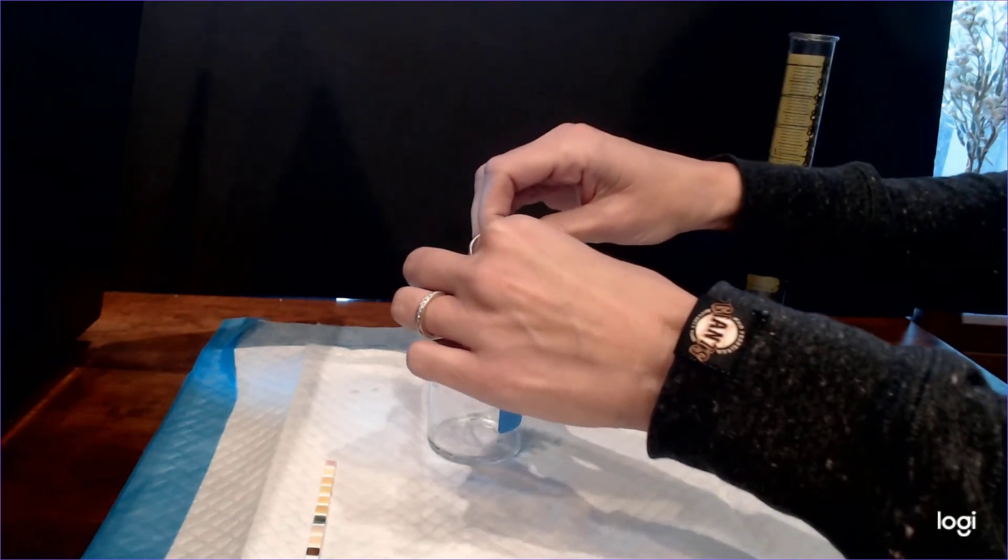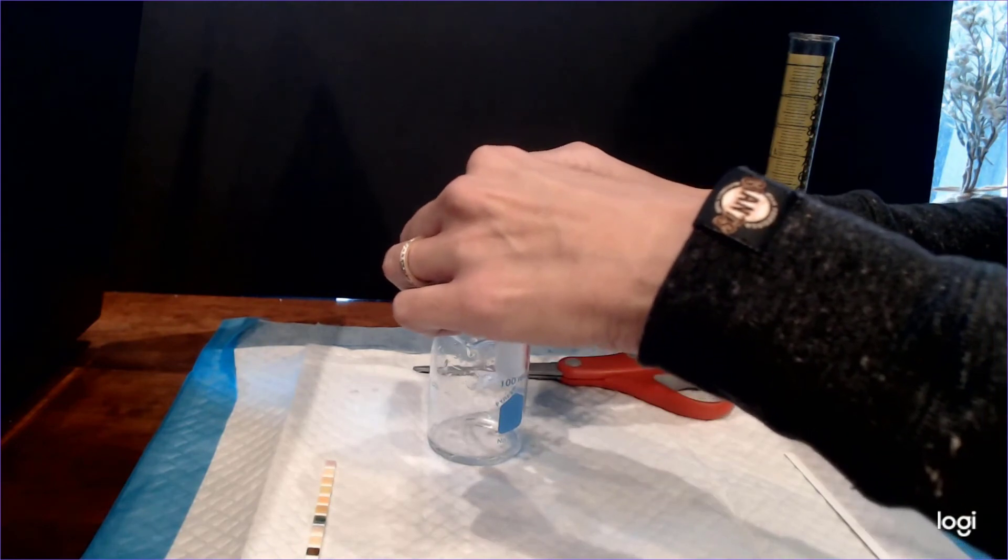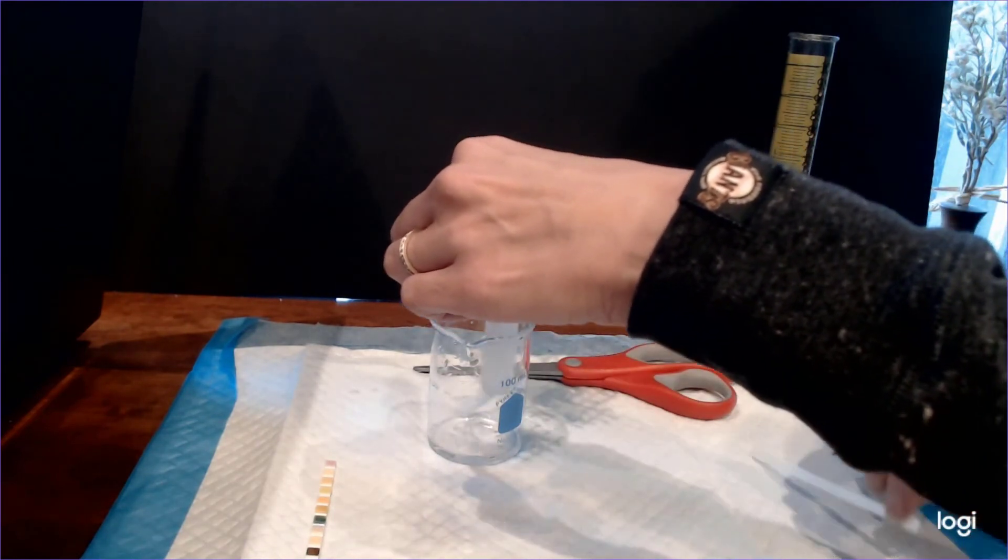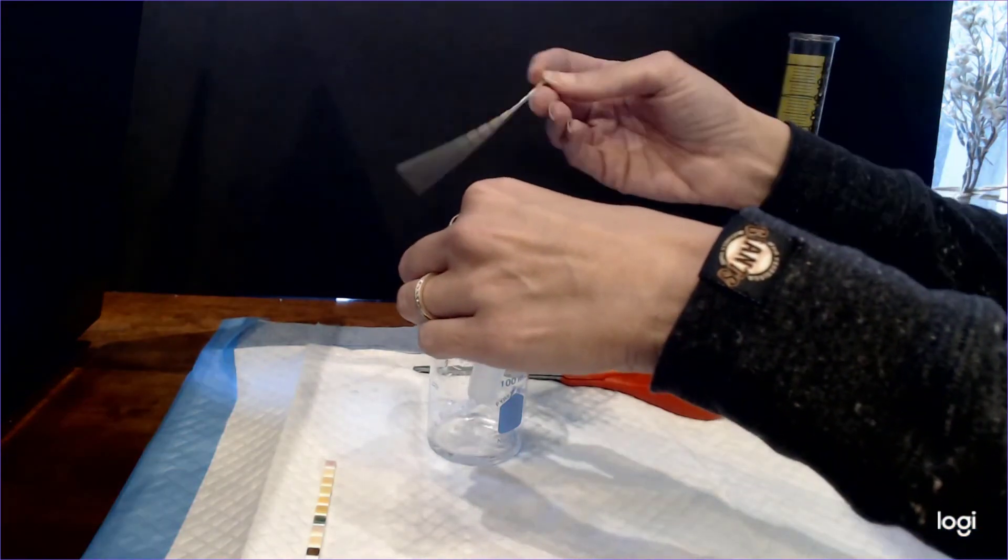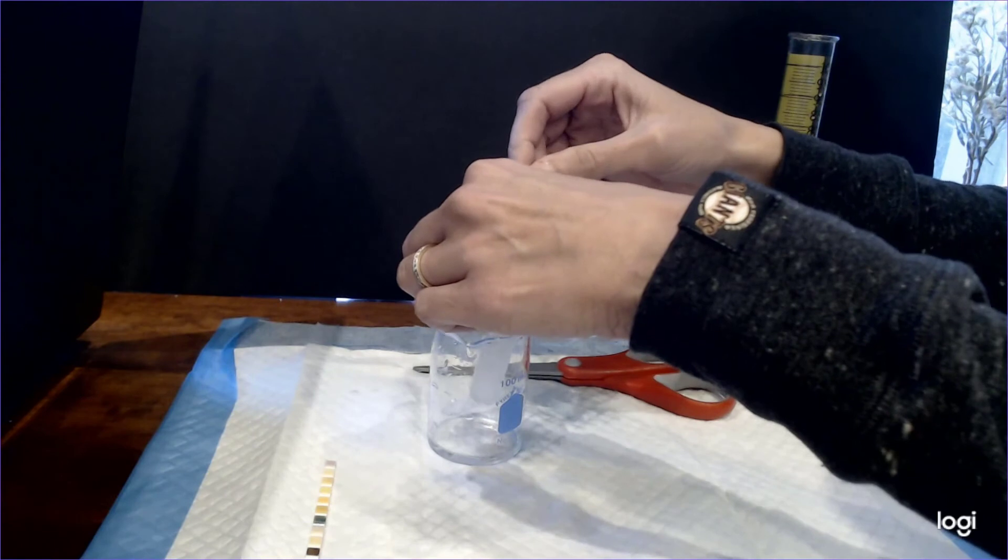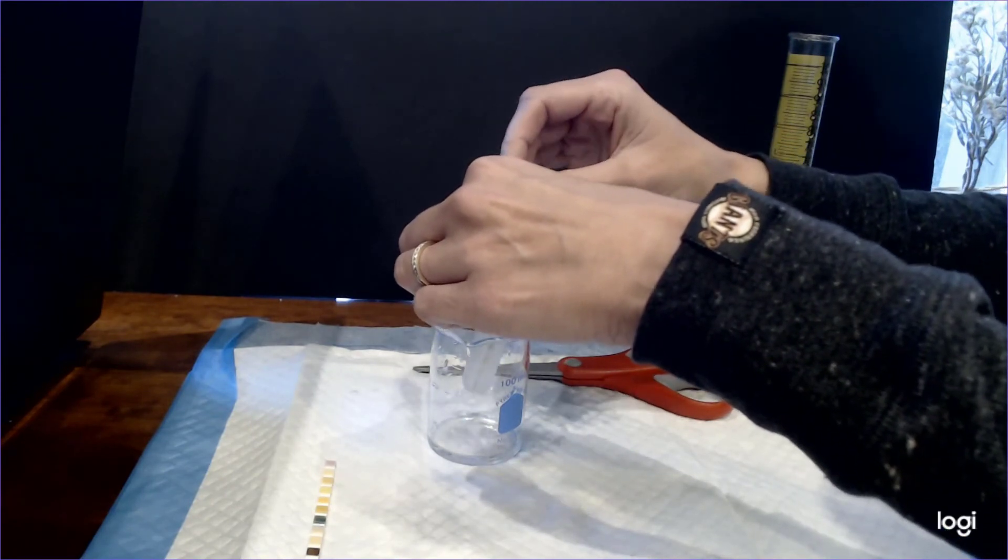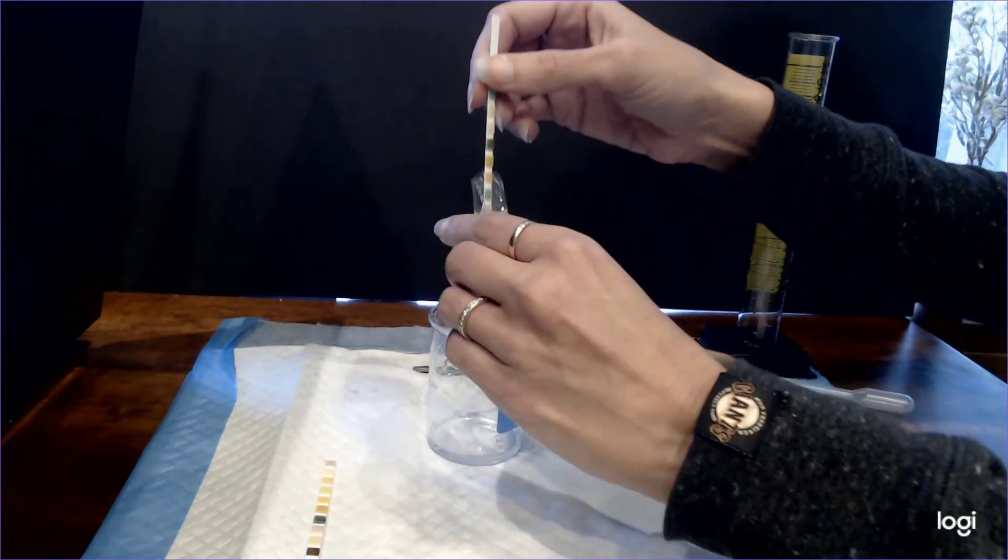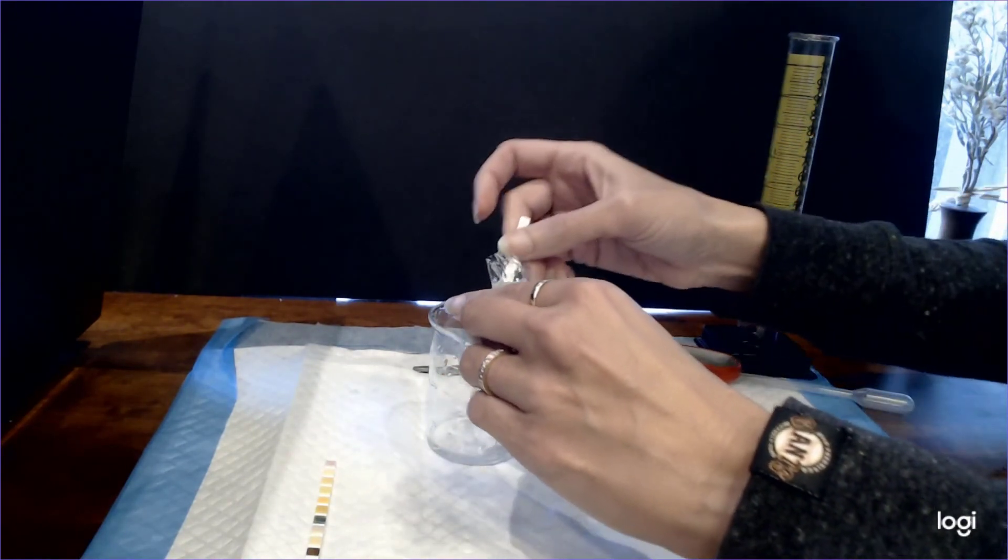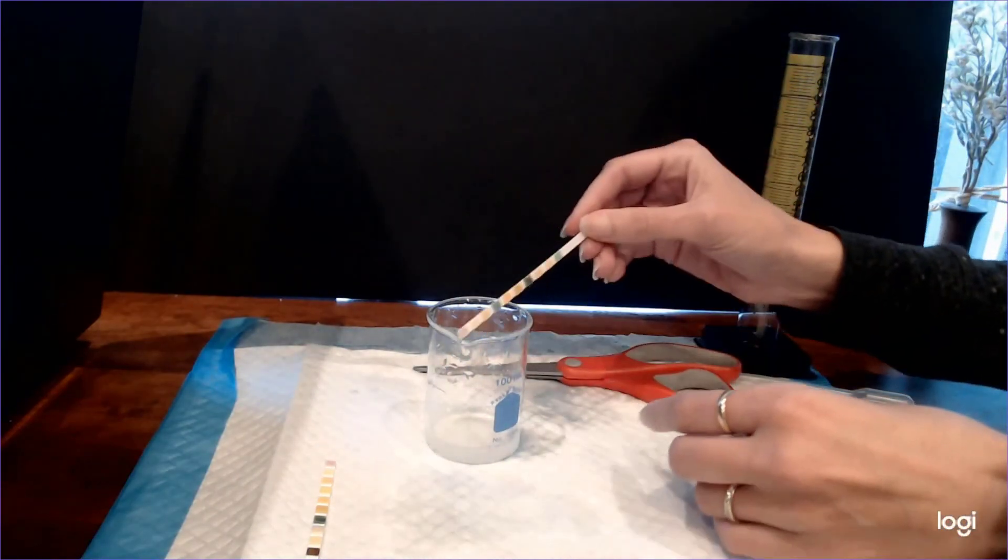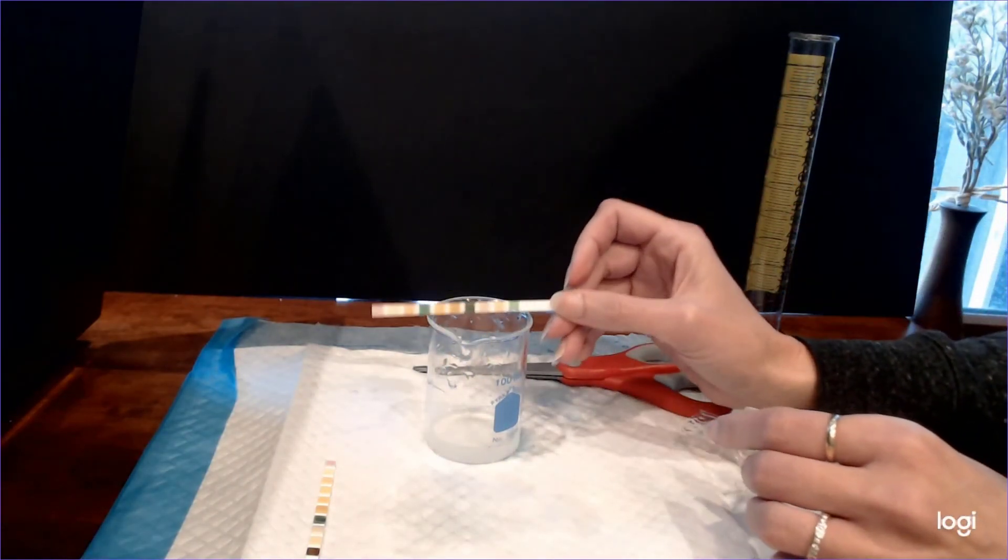So I went ahead and just used scissors to kind of cut off the very top, get a little bit of an explosion there so you might want to do it over your beaker. And then you're going to go ahead and take your dipstick and dip it in the dialysis bag. Now it might be difficult to actually submerge all of the pads in the dialysis bag, so one thing that you can do is you can use your plastic pipette and just kind of squirt some of the solution over, or in my case what I did is I just kind of dumped it over the multi-stick.